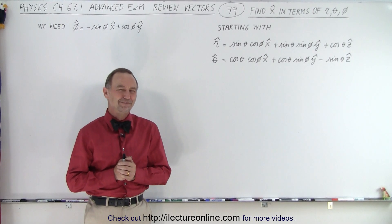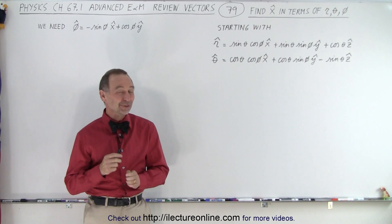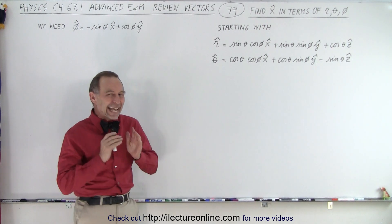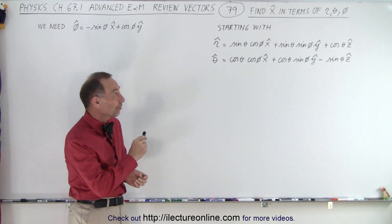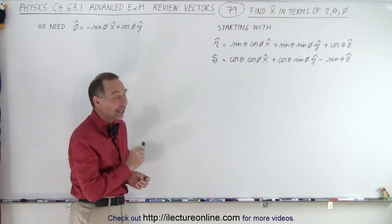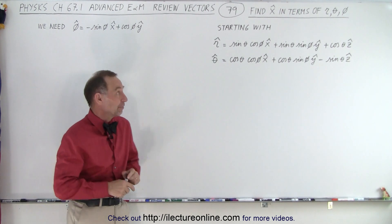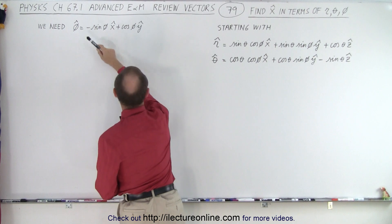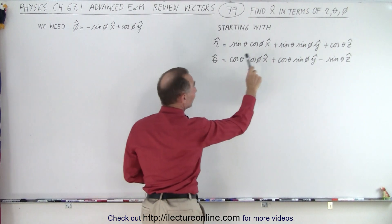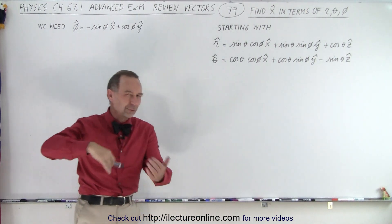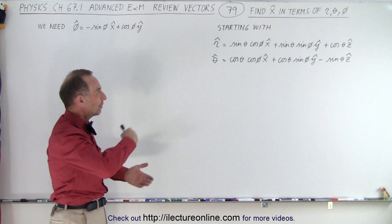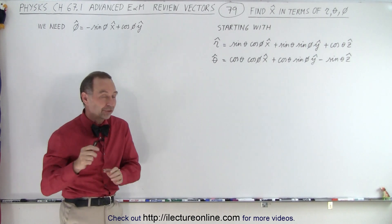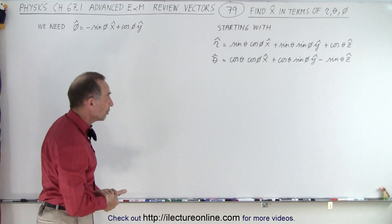Welcome to our lecture online. Now we're going to do something kind of fun. We're going to try to define the x unit vector in terms of r, theta, and phi. So far what we've done is we defined r, theta, and phi unit vectors in terms of x, y, and z. Now we're going to turn the tables and solve for the x unit vector in terms of the spherical unit vectors.